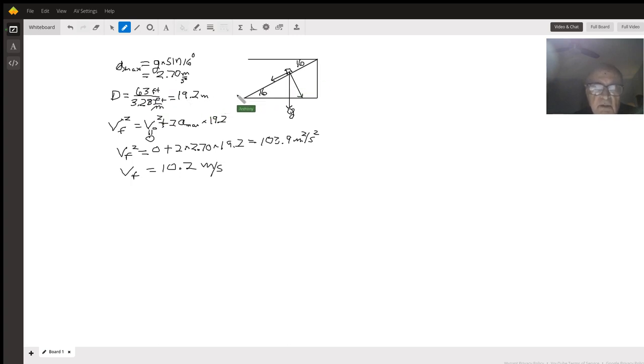There's a formula in physics that says that the final velocity squared is equal to the initial velocity squared plus twice the maximum acceleration times the distance, which is 19.2.